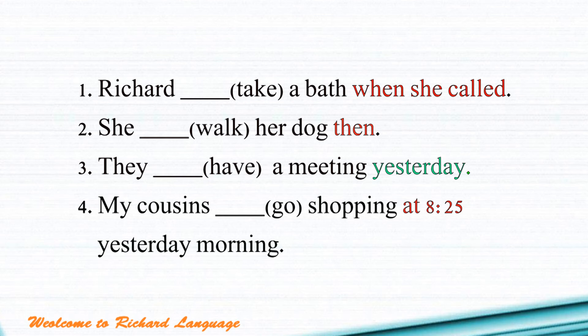Sentence three: 'They ___ a meeting yesterday.' Here, you only see a past time adverb — 'yesterday' — and you don't see a specific time like 'at 2 o'clock' or 'at 3:30.' So this calls for past simple tense. The answer should be: 'They had a meeting yesterday.'